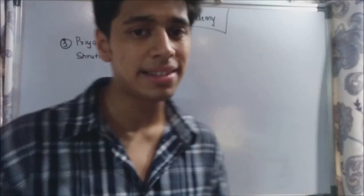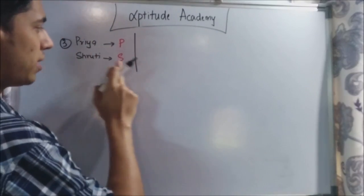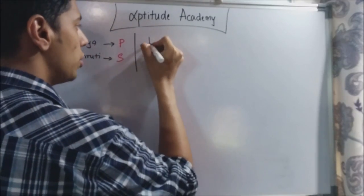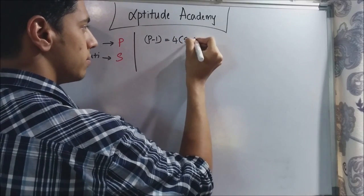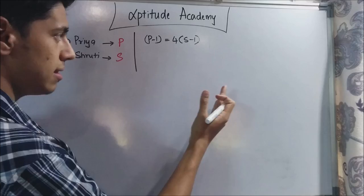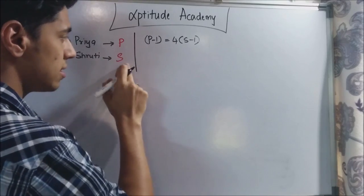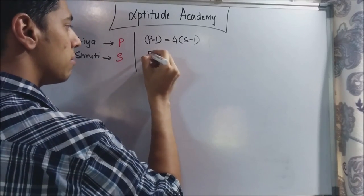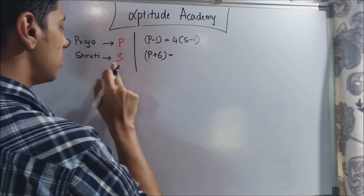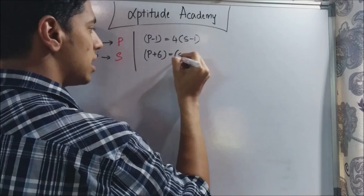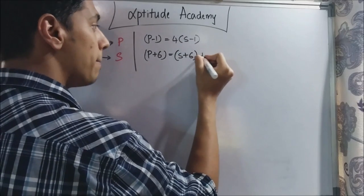Now for the third problem let us assign Priya as P and Shruti as S. They have said that 1 year ago Priya was 4 times Shruti's age. And 6 years hence, their present ages are P and S. 6 years hence Priya, so P plus 6 is 9 years elder than Shruti. So Shruti's age after 6 years will be S plus 6 plus 9.